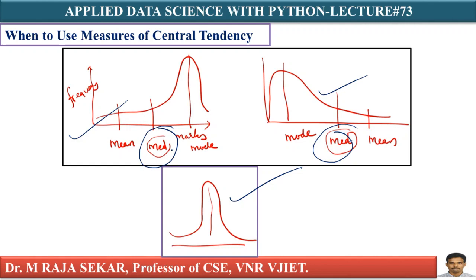Skewed data means whether it is right-skewed or left-skewed, you can choose median as the measure of central tendency. If it is a bell-shaped curve, then you can go for mean, median, or mode as central tendency.